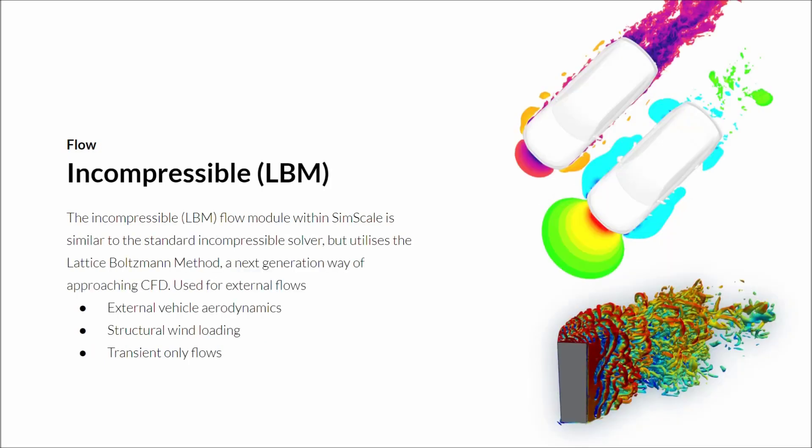Next up is the incompressible LBM flow module. This is similar to the previous simulation type, but uses the lattice Boltzmann method, a next generation way of approaching CFD, that's incredibly fast, efficient, and always transient. It's generally used for external flows, for example vehicle aerodynamics and structural wind loading.